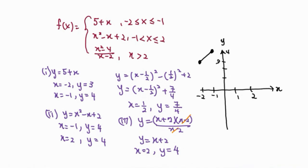For the second piece, at x equals negative 1, y equals 4, which coincides with the end of the first piece. The ending point is at x equals 2, y equals 4. This is a quadratic, so the shape is a smiley face with minimum at x equals 1/2, y equals 7/4.